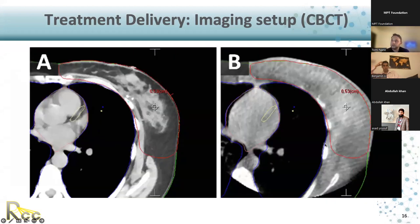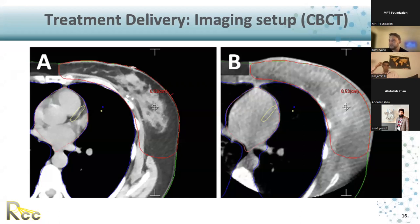For VMAT or IMRT at our center, we do cone beam CT — if your LINAC has onboard imaging. Here on the left is a CT from simulation and on the right is a cone beam. We match the cone beam to the CT. Delivery of these plans, even VMAT, is usually pretty quick — after you set up the patient you can deliver the dose in probably a minute, two minutes max. If you're doing deep inspiration breath hold, treatments tend to be a little longer as you have to instruct the patient to hold their breath and ensure a consistent breath hold as at simulation.